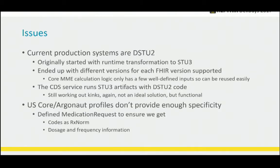Another issue is that the US core Argonaut profiles that the systems support don't provide enough specificity. So we define a profile on the medication request to ensure we're actually getting data in RxNorm code and dosage and frequency information. We've got a profile that derives from the US core profile that adds that information. It turns out most systems are already giving us that, but the University of Utah did build an additional poll because some information was not coming back in the medication request. At least with this medication request profile, we can say: in order to run this logic, you're going to need the RxNorm code and the dosage and frequency information.